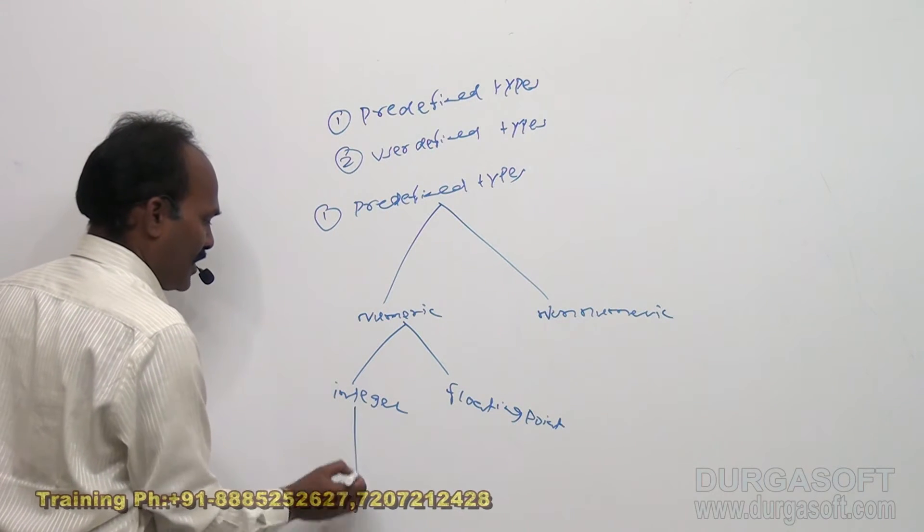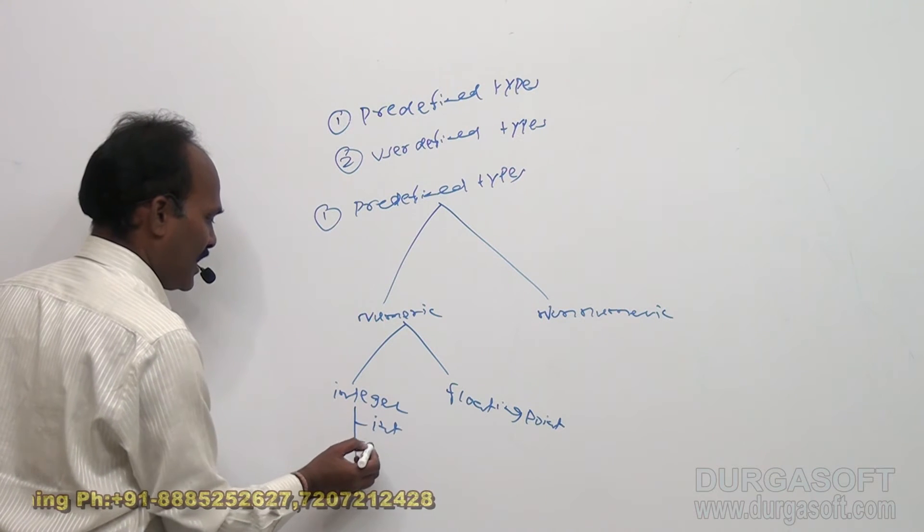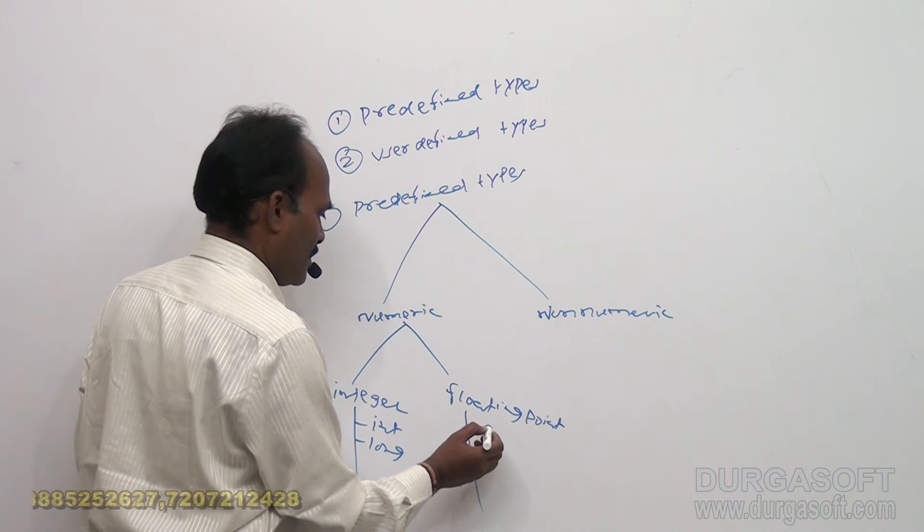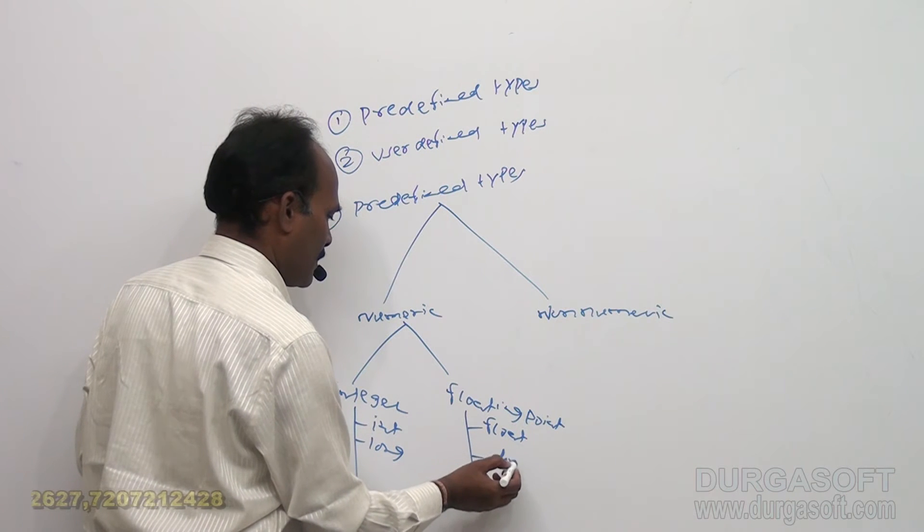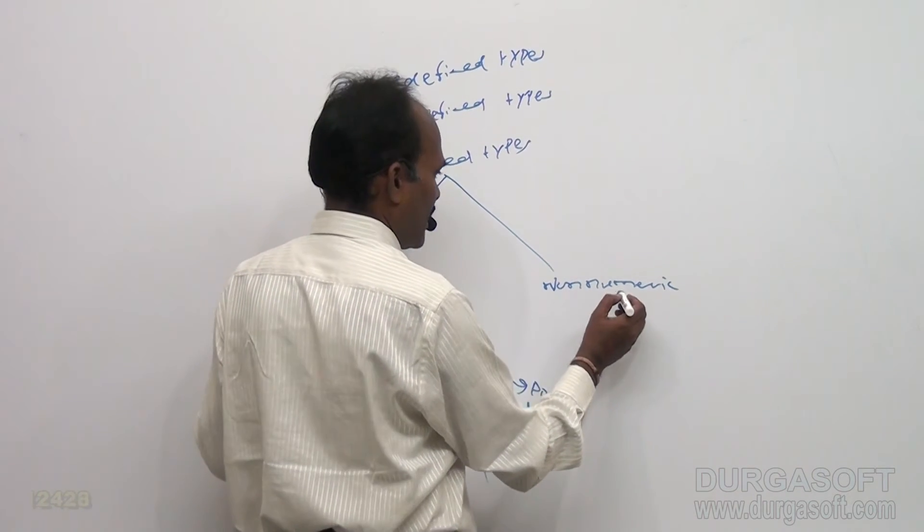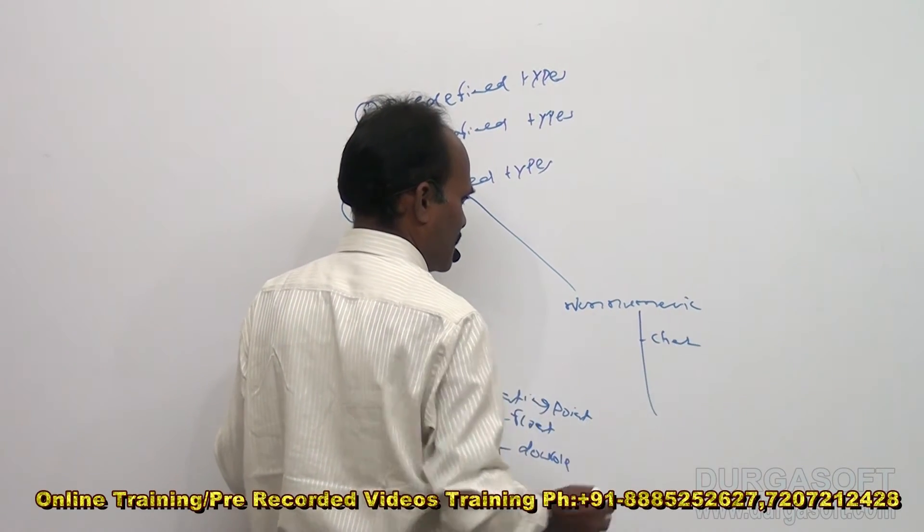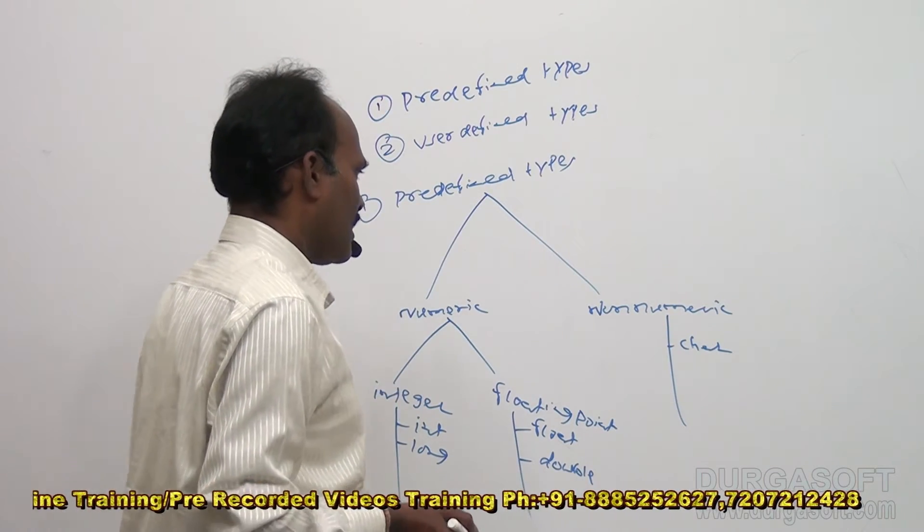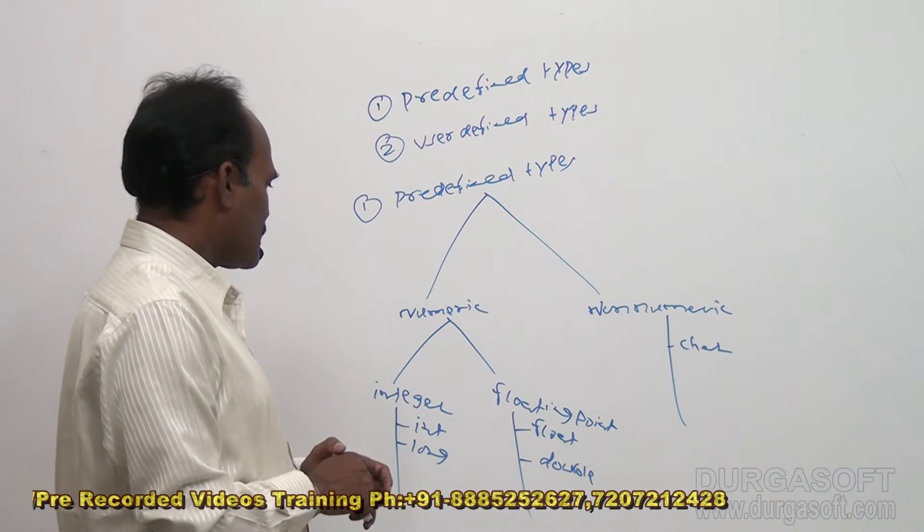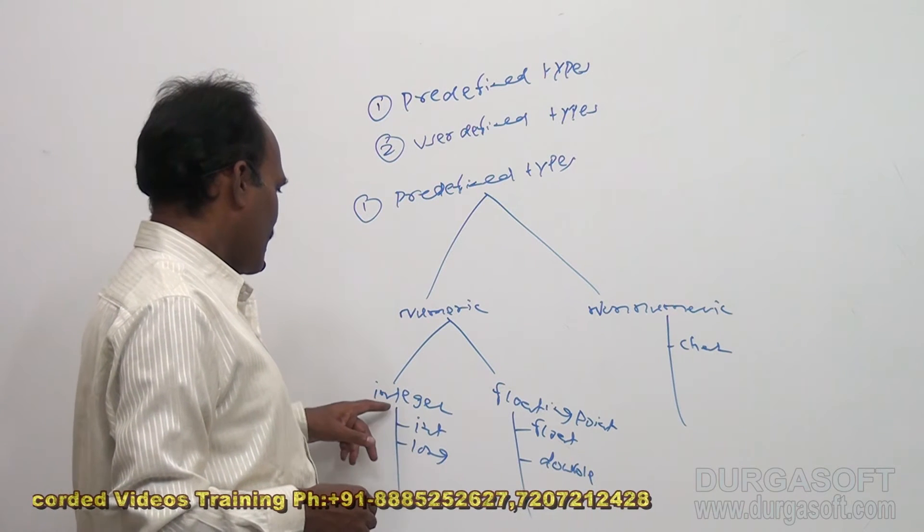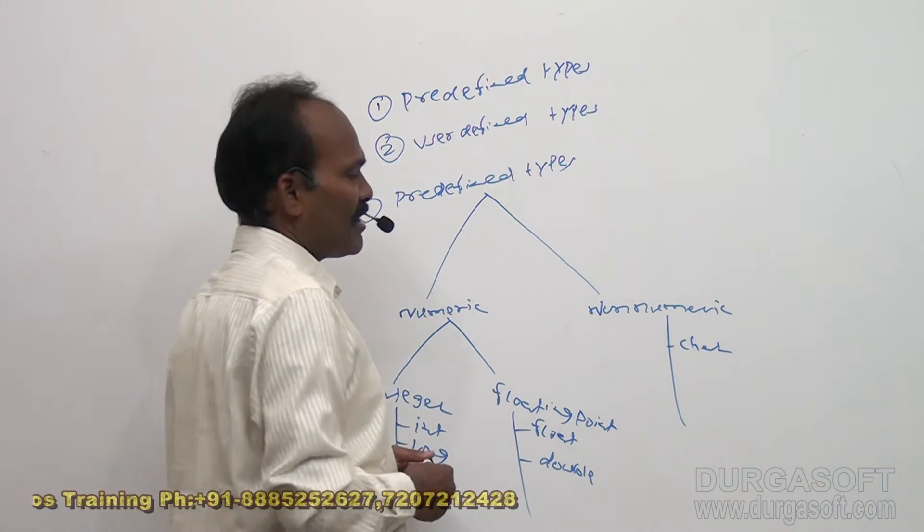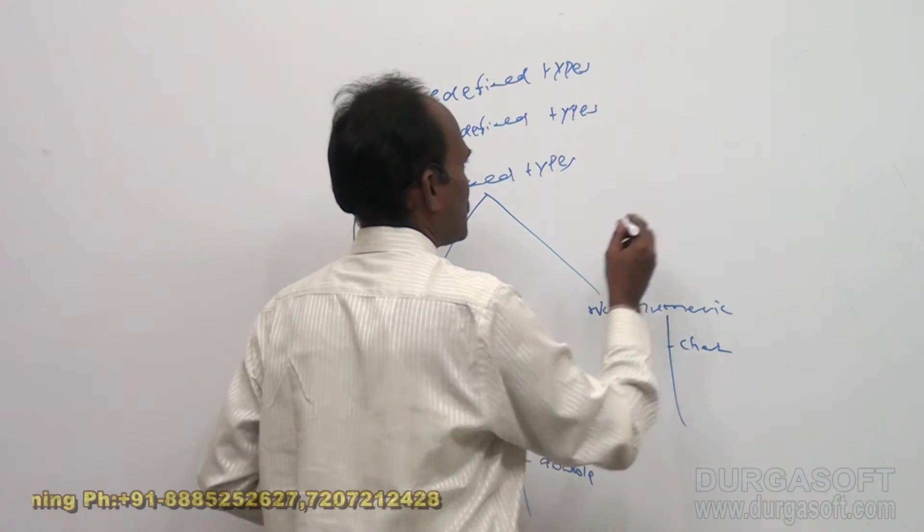And under integer we can have int and long. Under floating point numbers we can have what, float and double. Float and double. So under non-numeric category we can have what, characters. So there is no string in C language. Character comes under non-numeric type. So under numeric category mainly we are going to have two types, integers and floating point numbers. So under integer and long, under floating point numbers we are going to have float and double. So under non-numeric category we are going to have only character type. So this is about predefined types. So under.